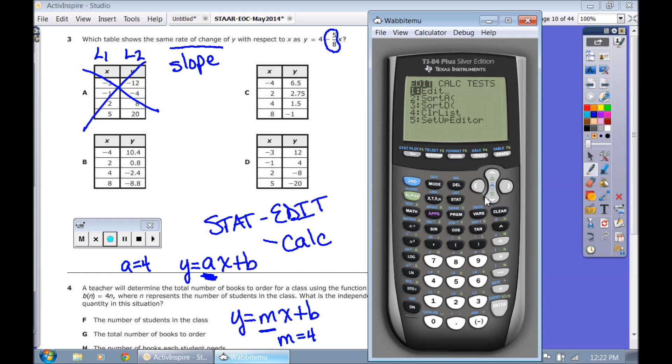So let's jump down. Let's look at another one here. We're going to go back under stat edit. Let's look at, we're just going to go over to letter C here. So L1 and L2. So for L1, we're just going to type in all the x values. Negative 4, 2, 4, and 8.